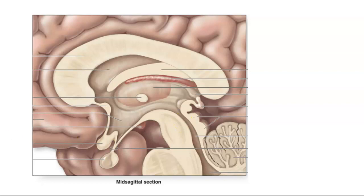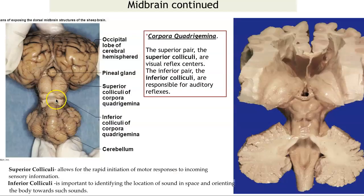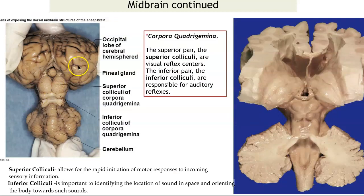Here is the cerebral aqueduct. Some places will call it the aqueduct of the midbrain. Here are those bumps — there's a bump on the top and a bump on the bottom. There are two bumps in each cerebral hemisphere, so there are four bumps total. We are calling the four bumps the corpora quadrigemina. Quad means four — so we have a body of four structures.